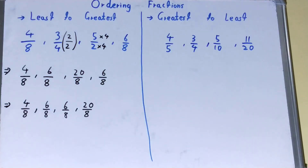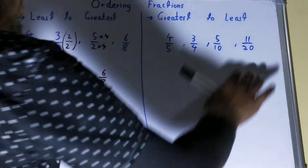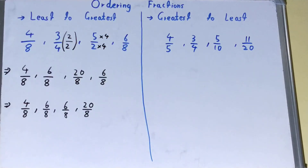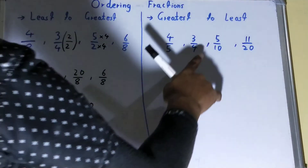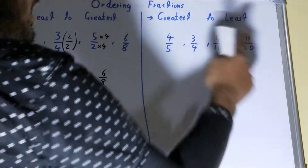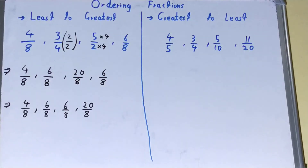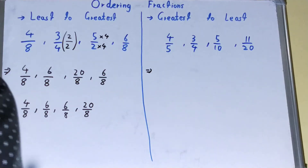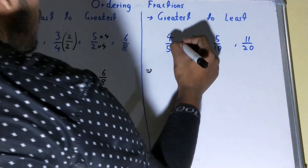Now let's arrange from greatest to least. The concept is the same — first we need a common denominator for all fractions. This one has 20 already. If we multiply 5 by 4 we get 20, if we multiply 4 by 5 we get 20, and if we multiply 10 by 2 we get 20 — so we can use 20 as the common denominator.